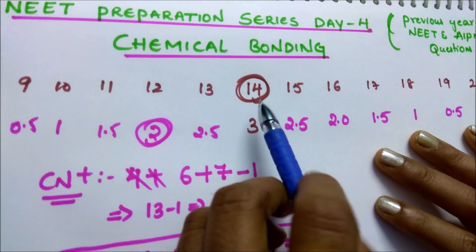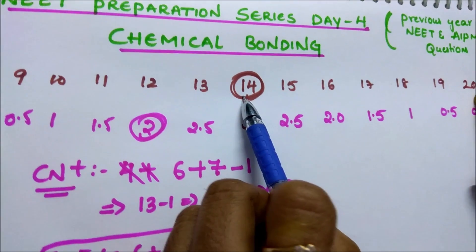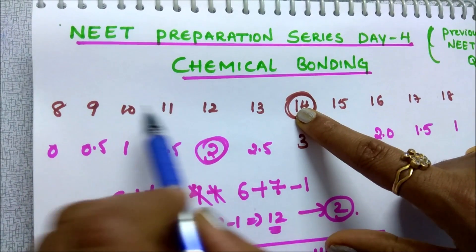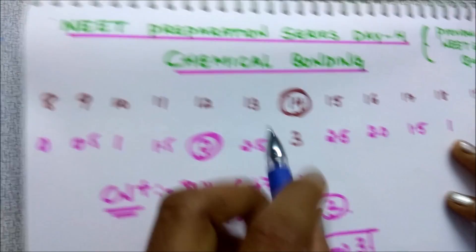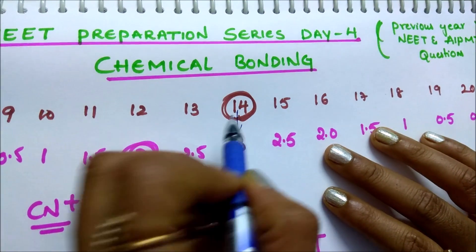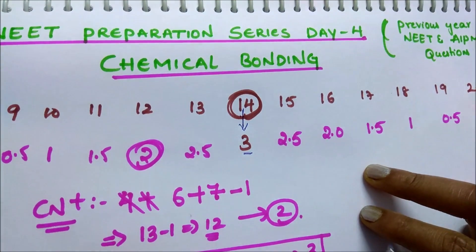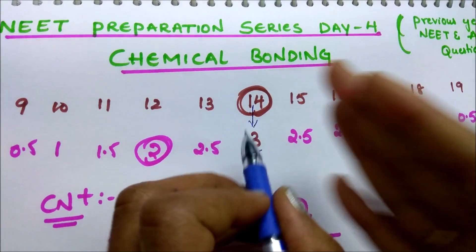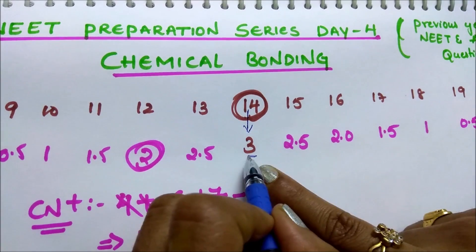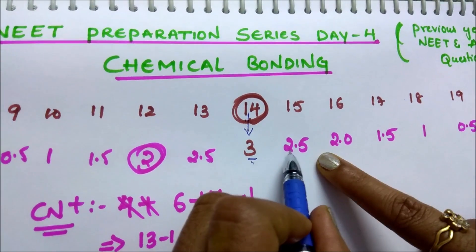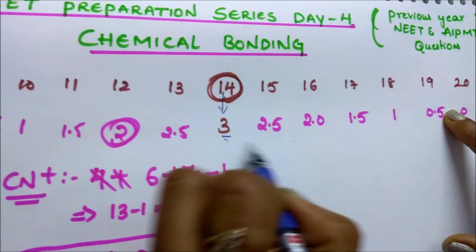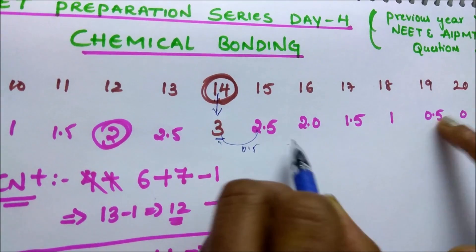First, write the numbers from 8 to 14, and then continue to 20. The number 14 means the species has the highest bond order, which is 3. From 14 onwards, decrease by 0.5 and write: 3, 2.5, 2, 1.5, 1.5. You are just decreasing by 0.5 and writing.